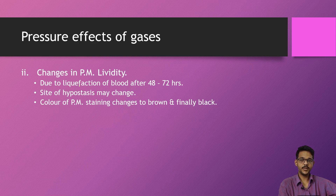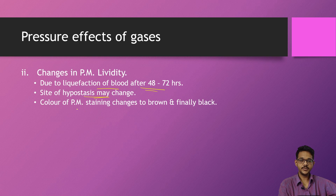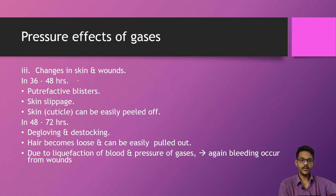Another effect of gases is a change in postmortem hypostasis. Postmortem hypostasis, which is the accumulation of blood in dependent parts of the body occurring before 12 hours, changes due to the diffusion effect of gases. The blood becomes liquefied in 48 to 72 hours. Later the site of hypostasis may change, and the color of postmortem lividity, usually pink, may change to brown and then black.